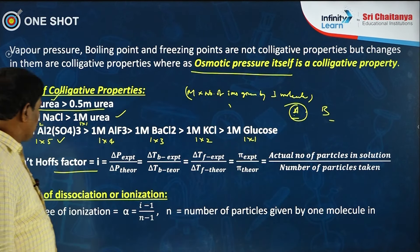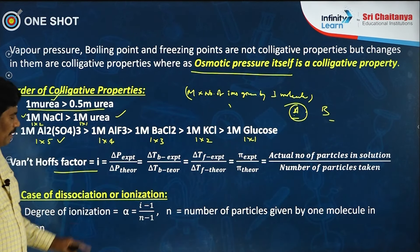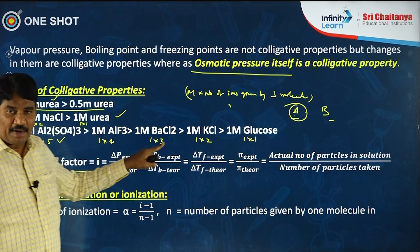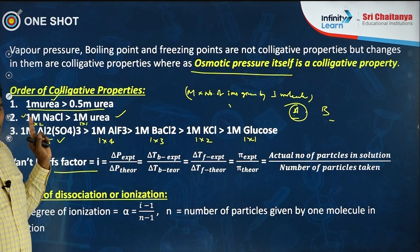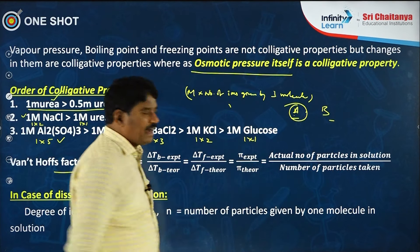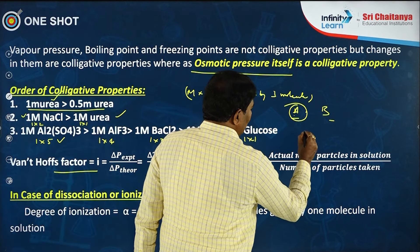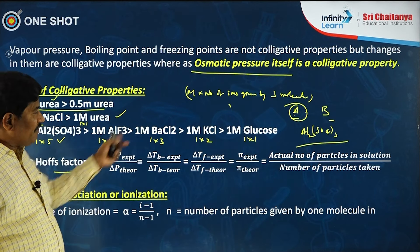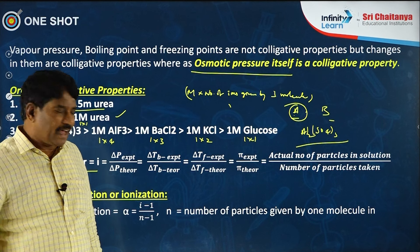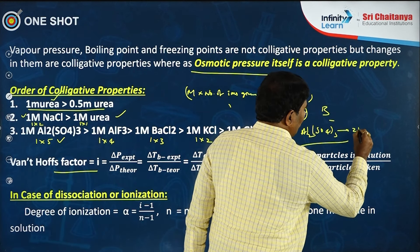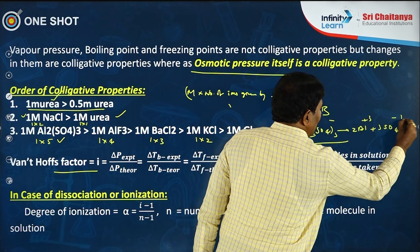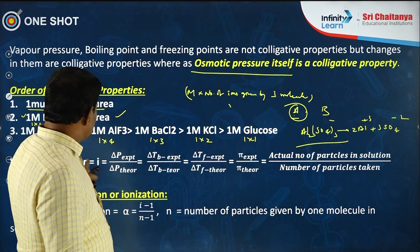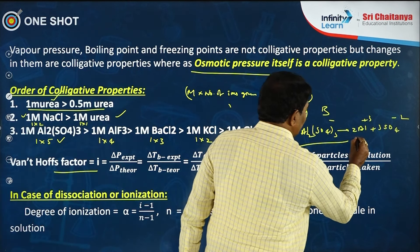Van't Hoff's factor = experimental colligative property / theoretical colligative property = actual number of particles in solution / number of particles taken. For example, Al₂(SO₄)₃ gives 2 Al³⁺ and 3 SO₄²⁻ ions — that is 5 ions per molecule — so the Van't Hoff factor for aluminum sulfate is 5 (assuming 100% ionization).